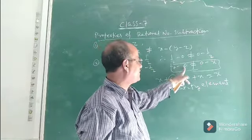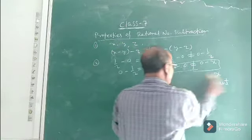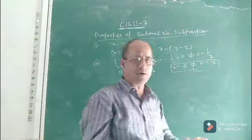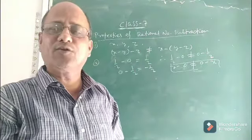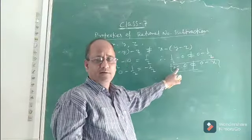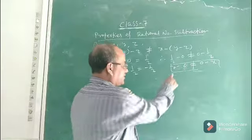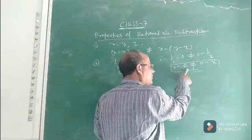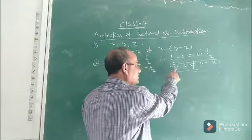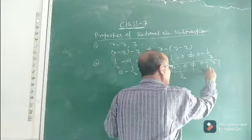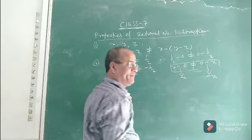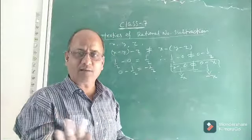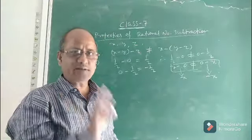But what about subtraction? x minus 0 is not equal to 0 minus x. Because x minus 0 is x, but 0 minus x is minus x. So x minus 0 is not equal to 0 minus x. The conclusion is: identity element does not exist for subtraction. Since x minus 0 equals x and 0 minus x equals minus x, and these two results are not the same, we say that subtraction of rational numbers has no identity element.